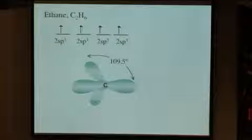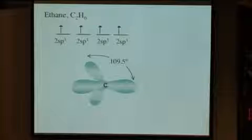So, we still have an angle of 109.5 degrees, and again, we still have four unpaired electrons available for bonding.